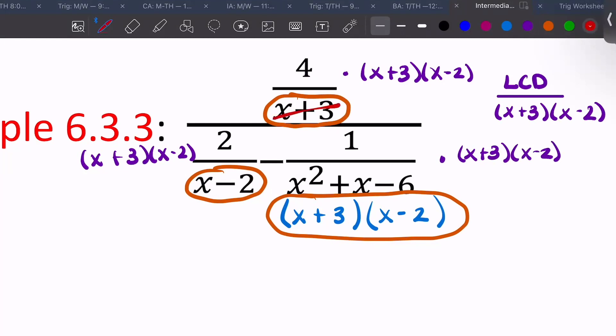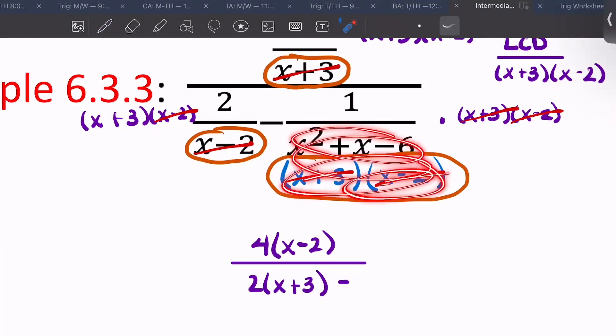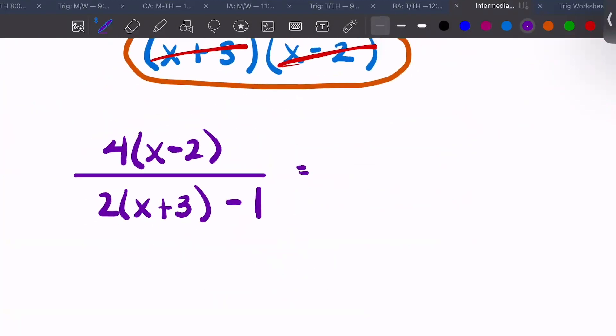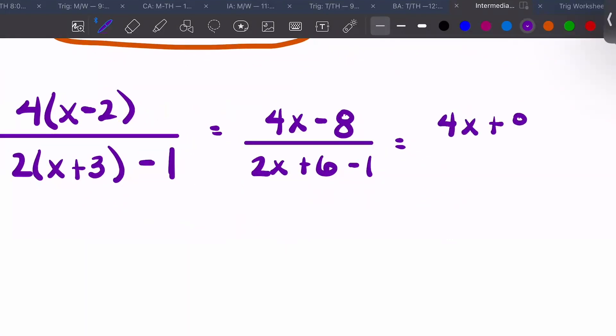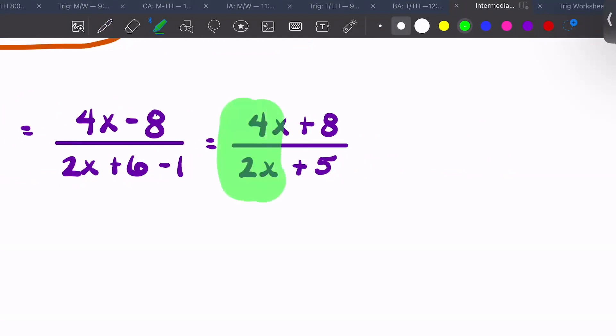And cross out. And both of these cross out. So we're left with 4 times x minus 2. We're left with 2 times x plus 3 minus. So all of this went away. And it's one. So I get 4x minus 8 over 2x plus 6 minus 1. Neither one of those can be simplified where it helps. We could take out a 4, but it wouldn't help. So we just have that.